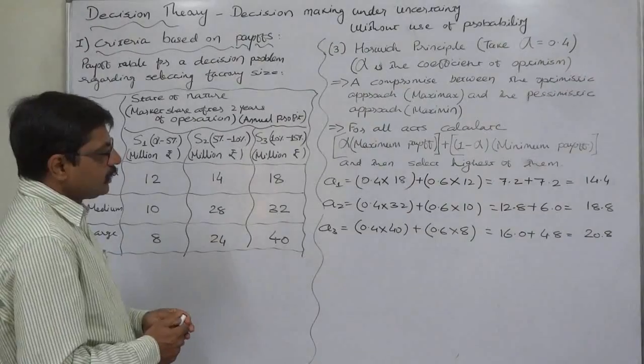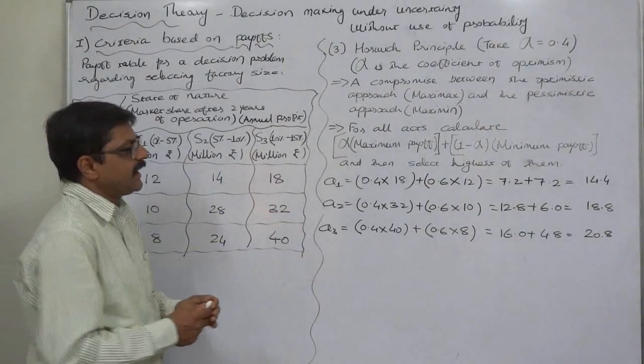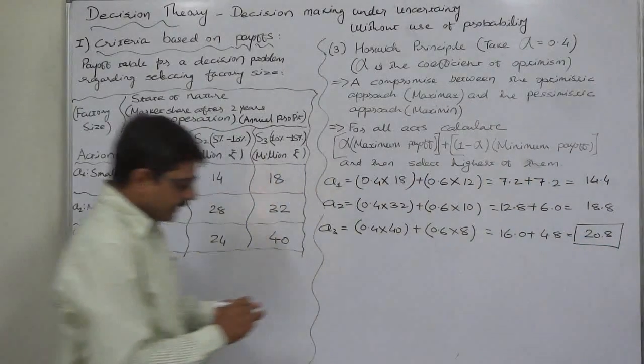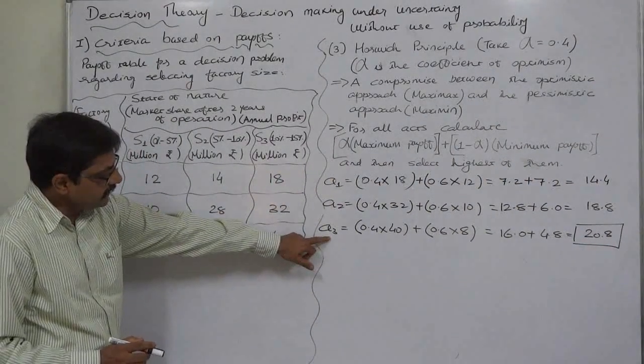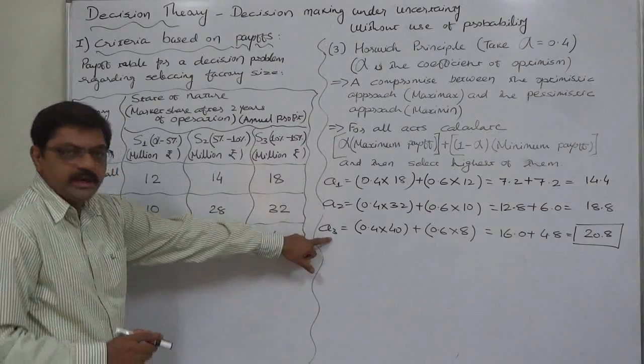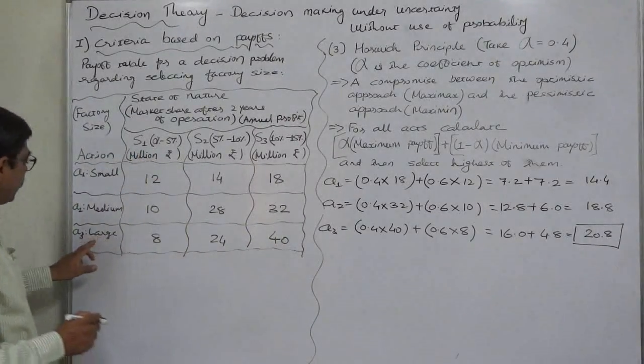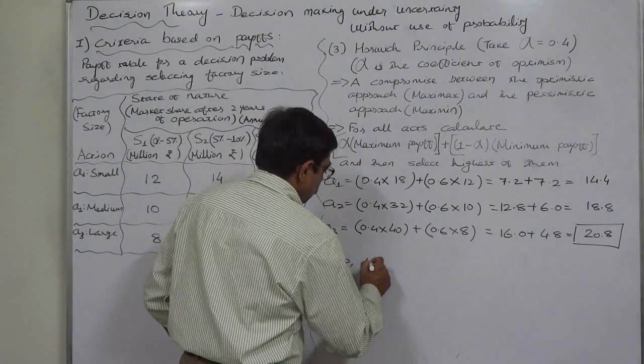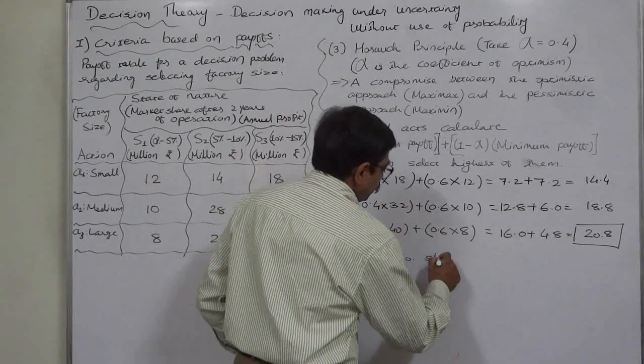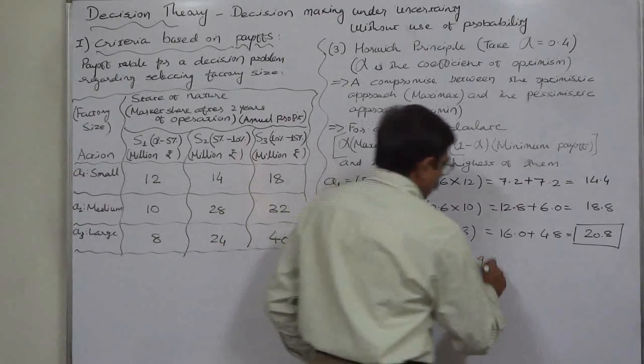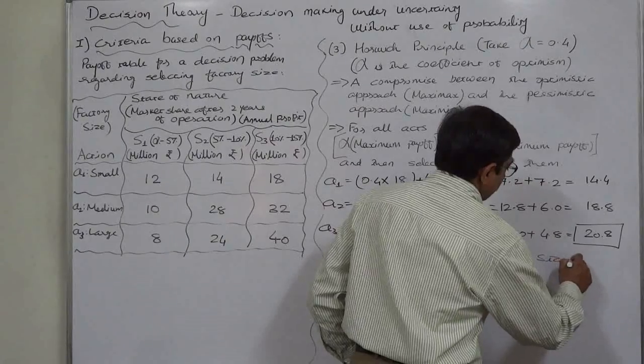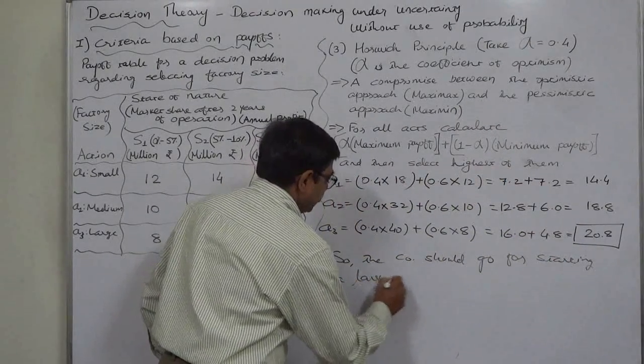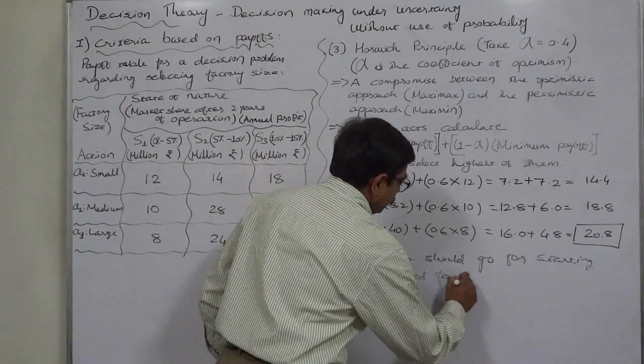Now to arrive at the conclusion, select the highest expected payoff among all these. 20.8 is the highest, and the corresponding action is a3. A3 means to create a large-sized factory, so the company should go for starting a large-sized factory at the new location.